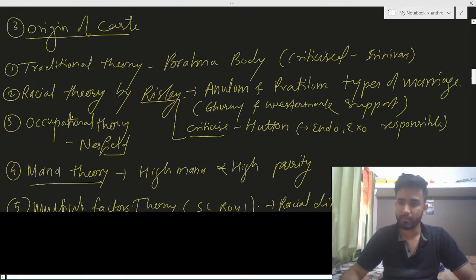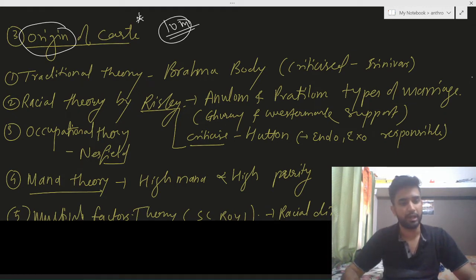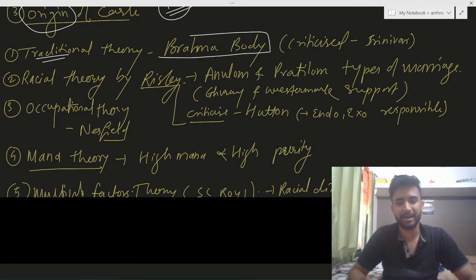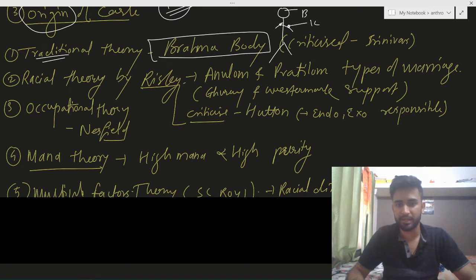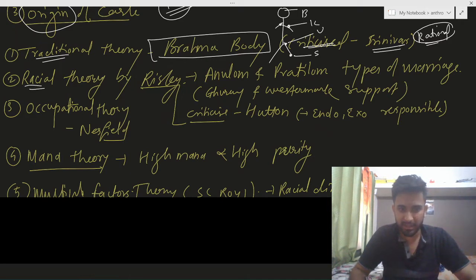The origin of caste is a very important topic — it can come for a ten-mark question. The first is the traditional theory, which says the origin of caste is from Brahma's body: from his head came Brahmin, from his shoulder came Kshatriya, from his thighs came Vaisha, and from his feet came Shudra. This was criticized by Srinivas and anyone with rational thought, as it is self-serving.